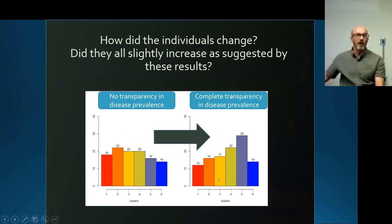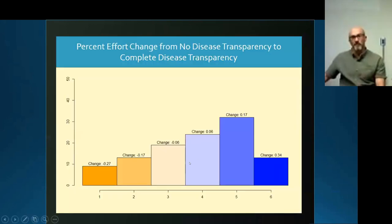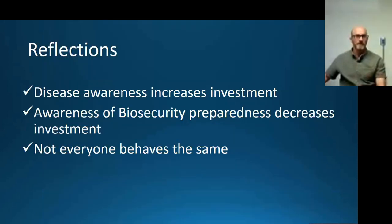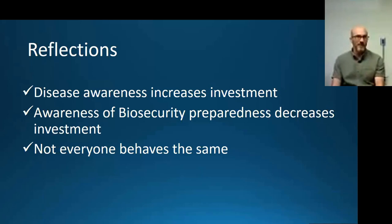What about the individuals within that system? Most people, when we made that shift and started telling them about where the disease was, improved or increased their biosecurity spending. However, about 20% of individuals actually decreased their spending on biosecurity. Not everybody is going to react the same way to our messages — some people behave in a good way and some in a different way, and that's an important factor to keep in mind.